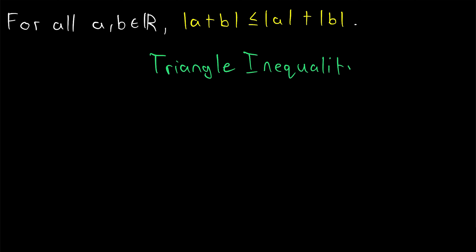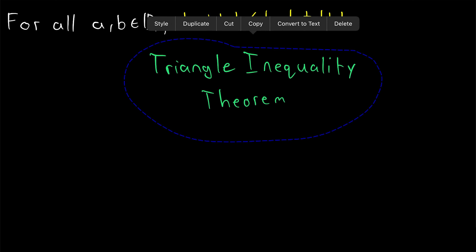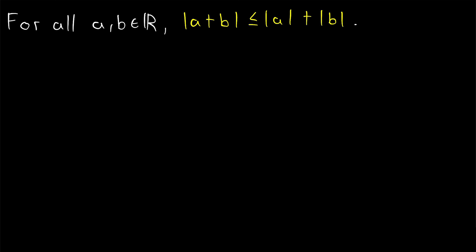This is an important theorem to get comfortable with so that you've got more power when working with absolute values. Super quick before we look at the proof, let's just see a quick example. Suppose we've got the absolute value of 3 plus negative 2. This is certainly less than or equal to the absolute value of 3 plus the absolute value of negative 2.